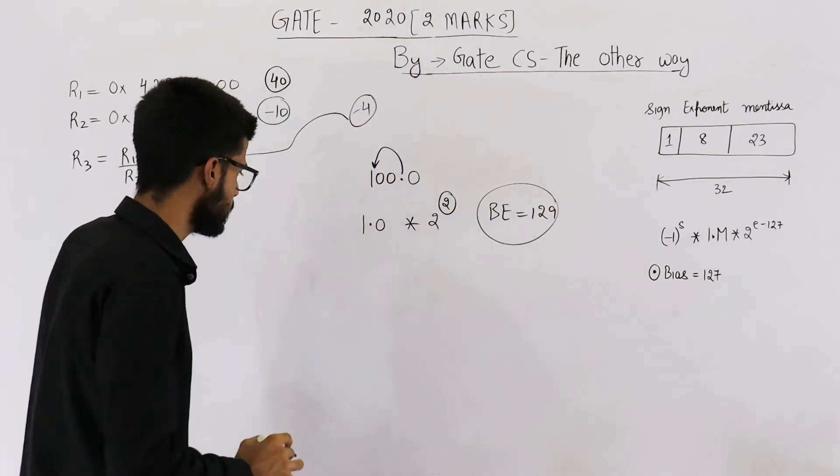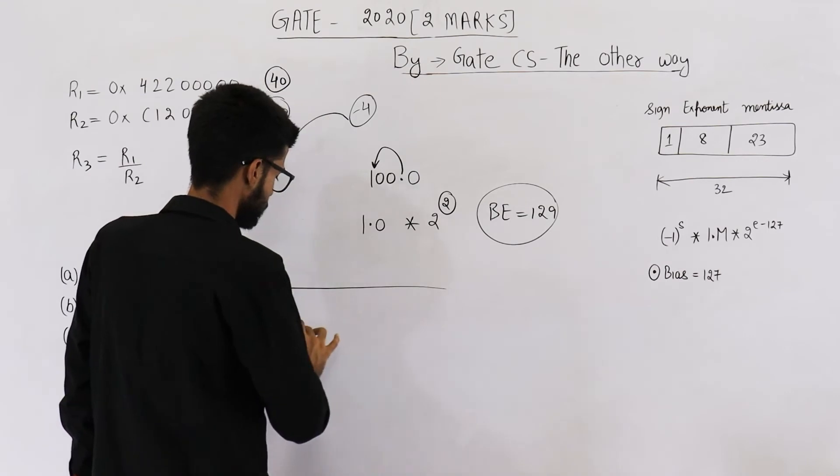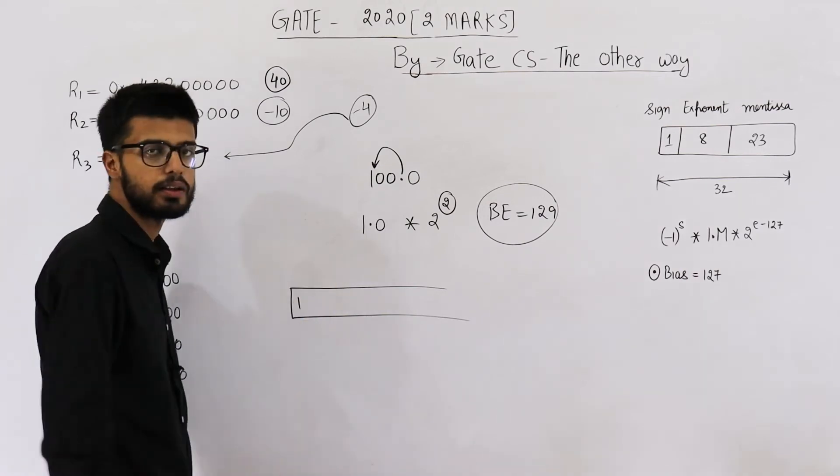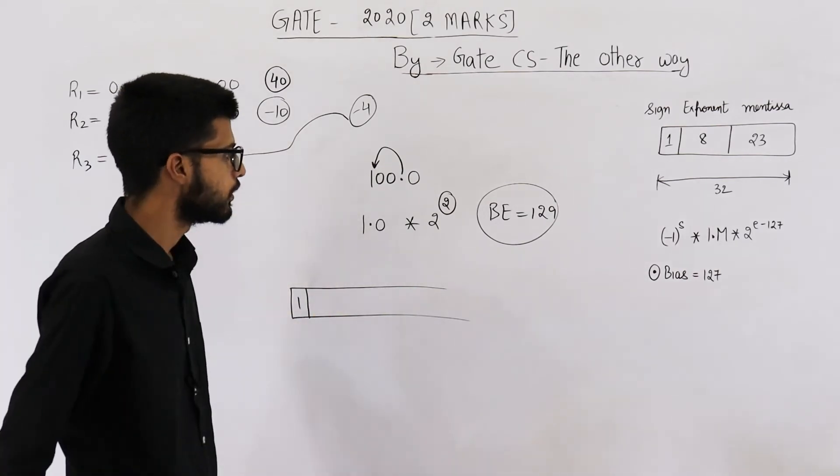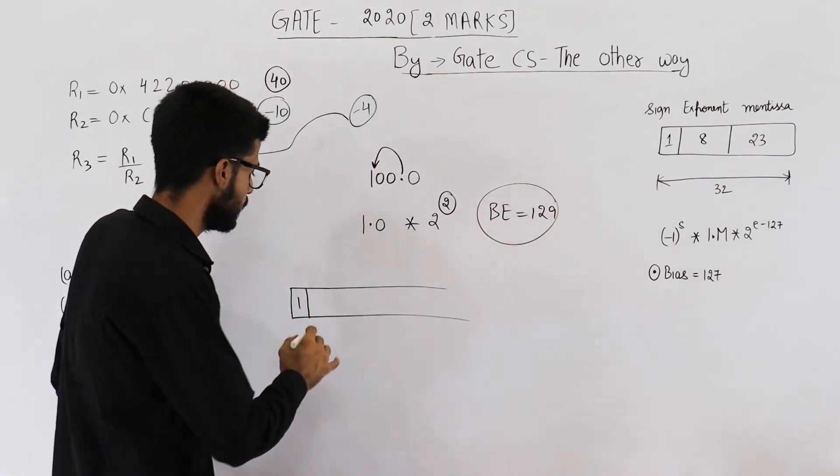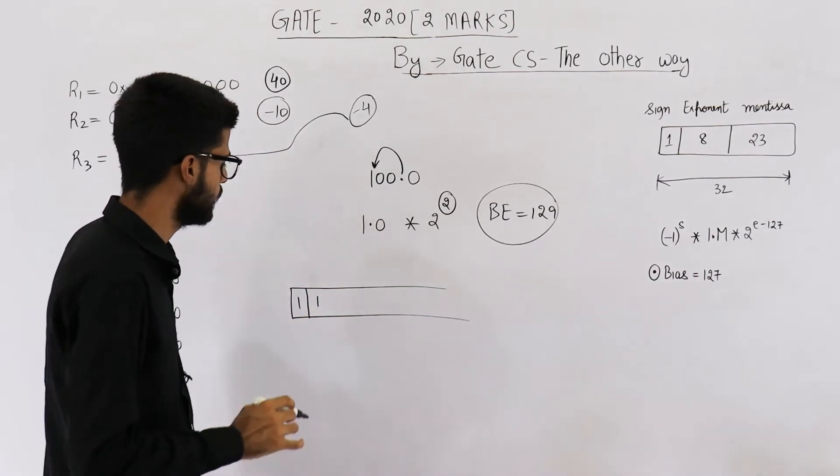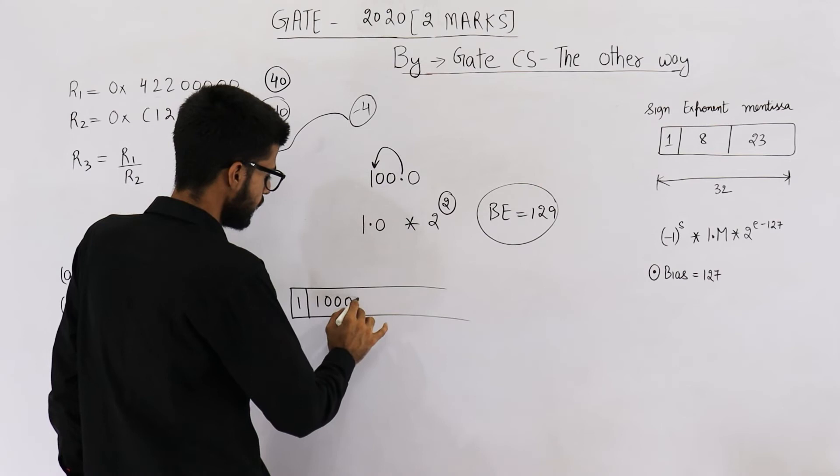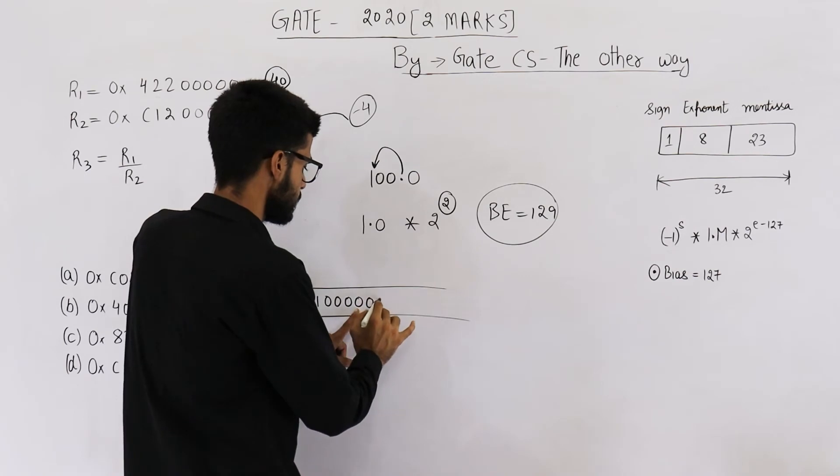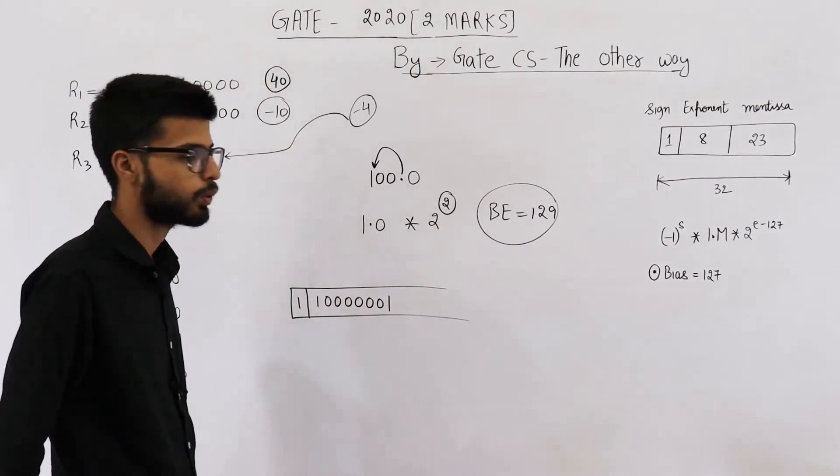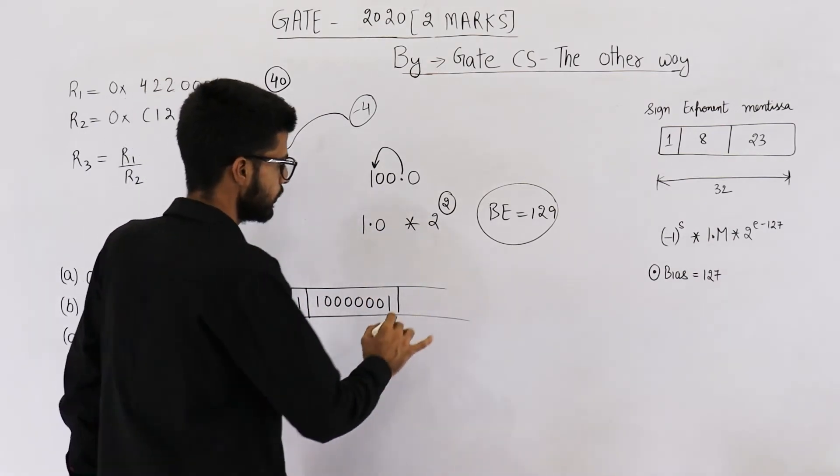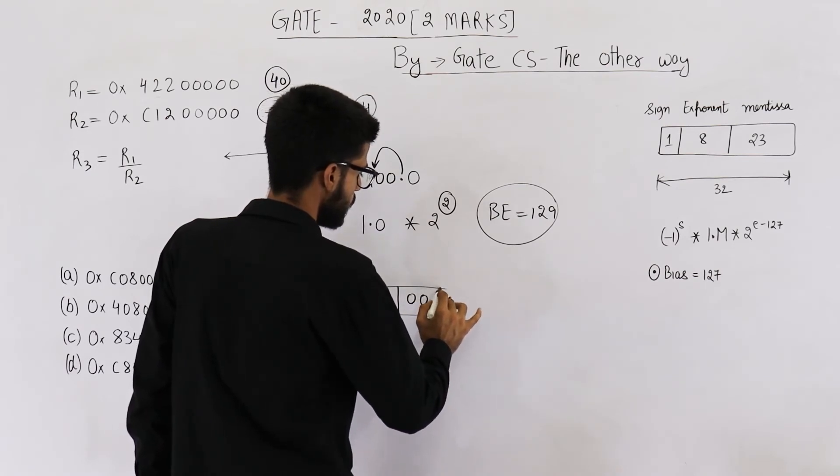Now let's just see what will be the 32-bit pattern. We want to represent a negative value, so write a 1 here - sign bit is 1. Now we want to save 129. 129 is 128 plus 1, so the first bit will be high for 128, rest all of the bits will be low except for the last bit. 1, 2, 3, 4, 5, 6, 7, 8 - this will be 129. And mantissa is 0, so these are all 0s, 23 zeros.